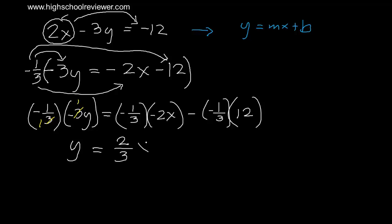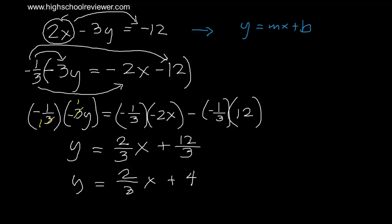Negative 1 over 3 times negative 2 gives positive 2 over 3, so we have 2 over 3 x. Negative 1 over 3 times negative 12 gives 12 over 3, which equals positive 4. So the result is y equals 2 over 3 x plus 4. This is of the form y equals mx plus b, and this is now our final answer.